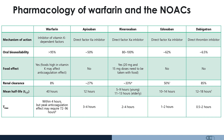Apixaban, rivaroxaban, and edoxaban — the NOACs or DOACs with XA in their name — are direct factor Xa inhibitors. The oral bioavailability of these drugs is between 50 and 100%. Apixaban and edoxaban do not have a significant food effect, whereas rivaroxaban should be taken with food, particularly at the higher dosages of 20 mg and 15 mg, in order for the drug concentration to be sufficient. Apixaban and rivaroxaban are renally cleared at only approximately 27% and 33% respectively, and so can be used in patients up to certain GFR thresholds. The mean half-life of each drug is approximately 12 hours, with a rapid onset of between 2 and 4 hours.